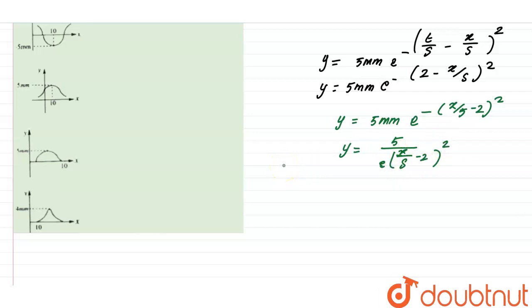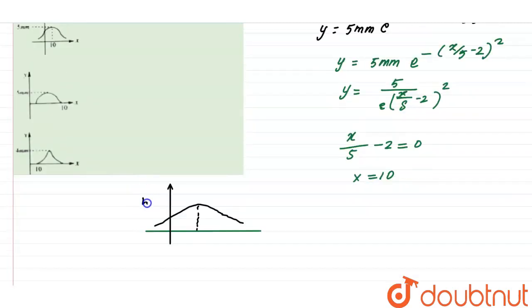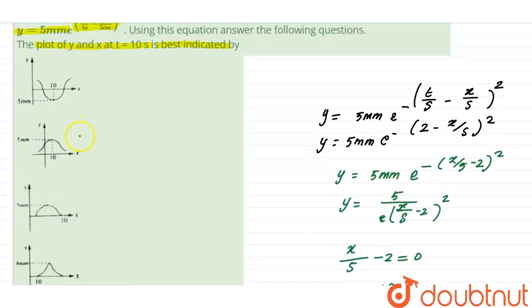So it will have maximum value when x by 5 minus 2 equal to 0. So now x equal to 10. Therefore y maximum equals 5mm at x equal to 10 centimeters on the x-axis. So the correct option is B. Thank you.